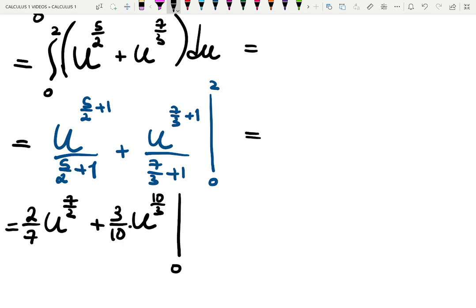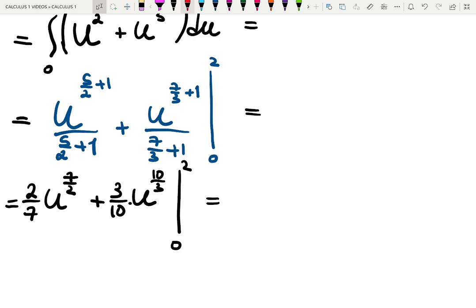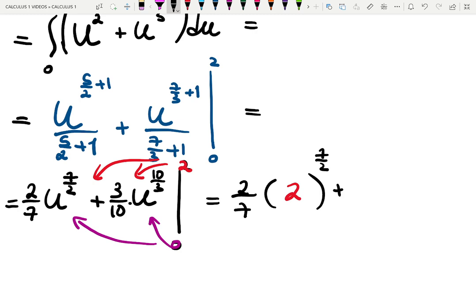Are we done? No. The last step is to substitute 2 and 0. Now I am first substituting 2 everywhere I see u. Basically, substituting the top first and then the bottom. The upper limit of integration and then the lower limit of integration into u. u is 2 and I am going to color-code it for you. Raised to the 7 over 2 plus 3 over 10. 2 is inside. Raised to the 10 over 3.